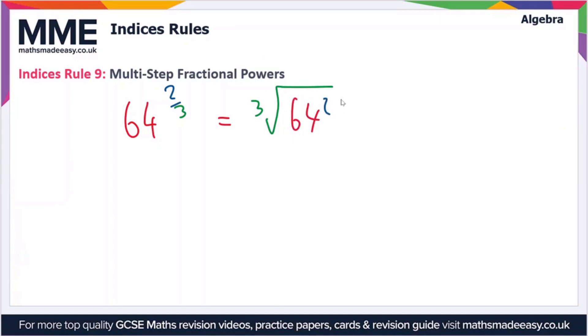Now this is obviously quite a difficult calculation to perform because we don't really want to be squaring 64, it's going to be quite a large number. So instead let's rewrite this expression. So we can rewrite this as the cube root of 64, all in brackets, and then squared on the outside.